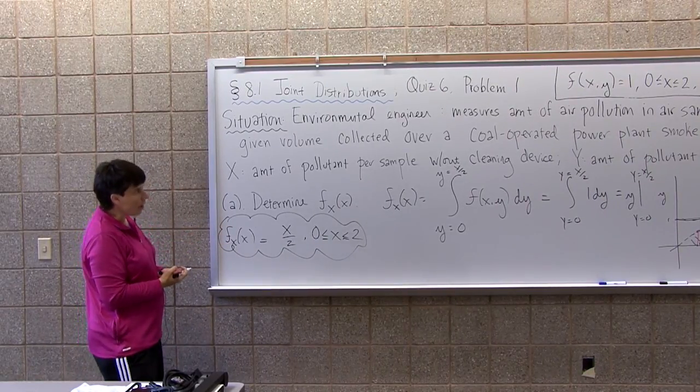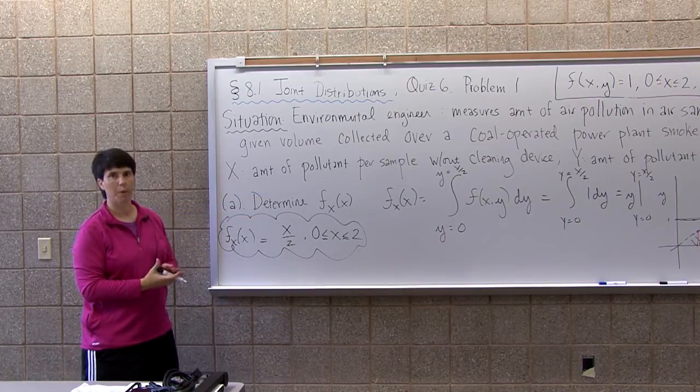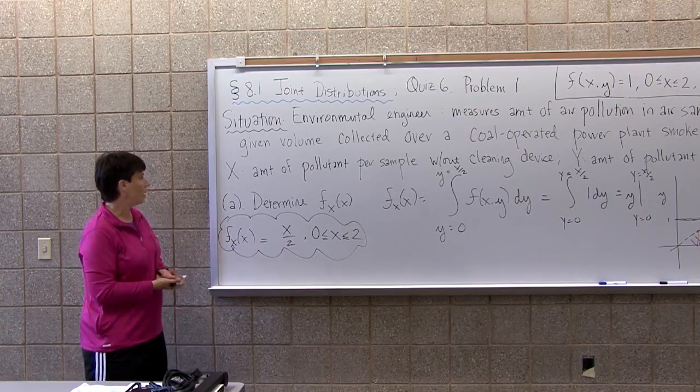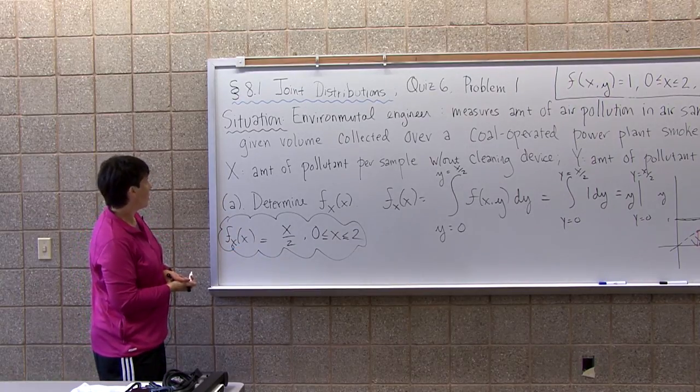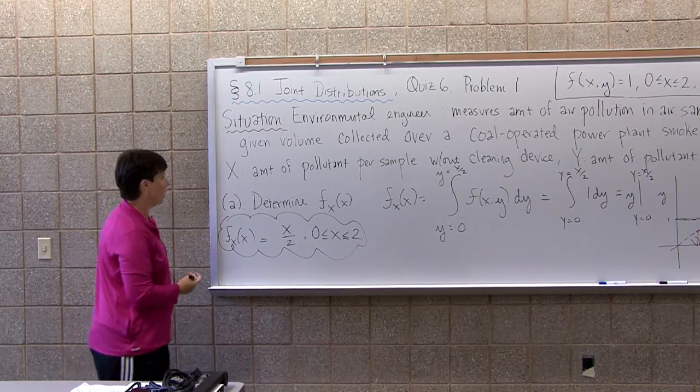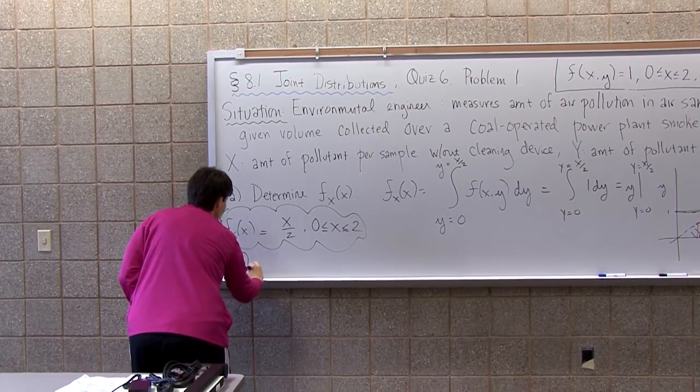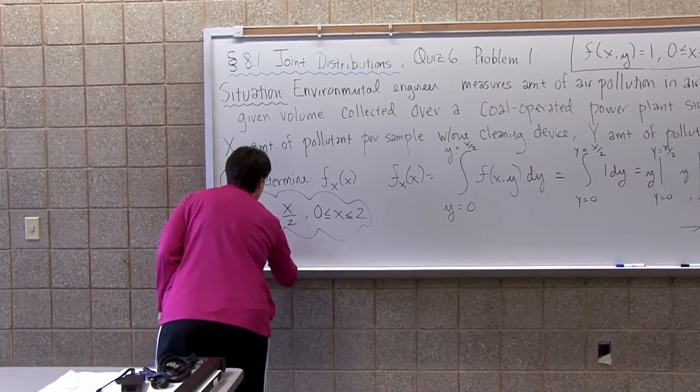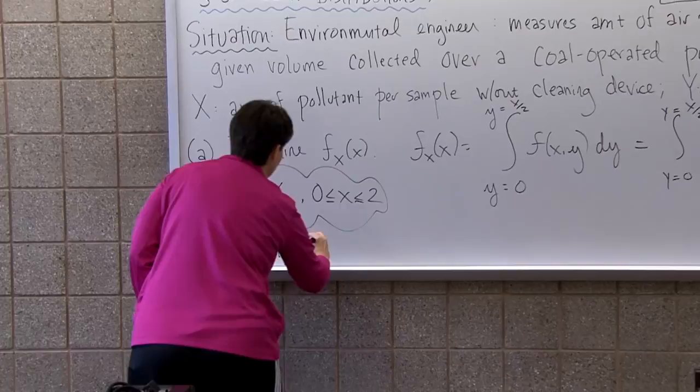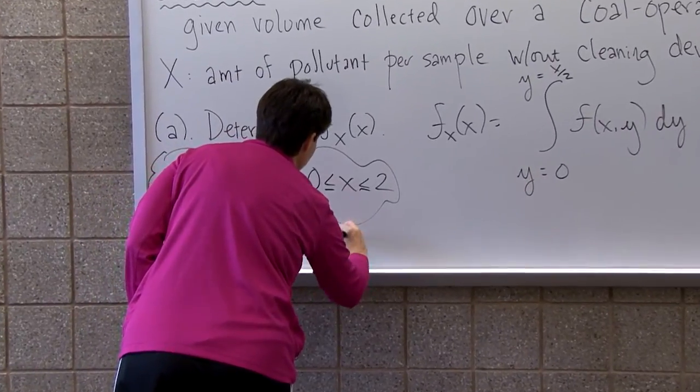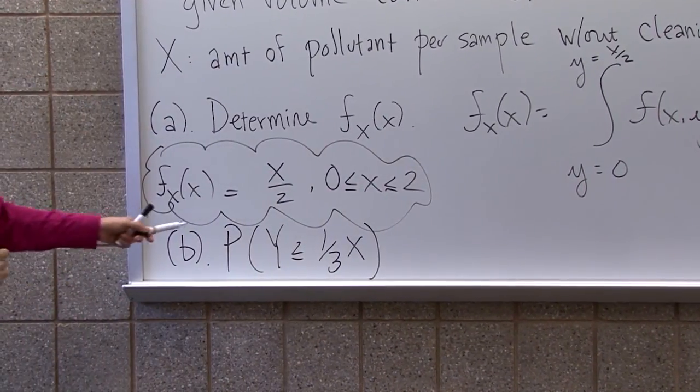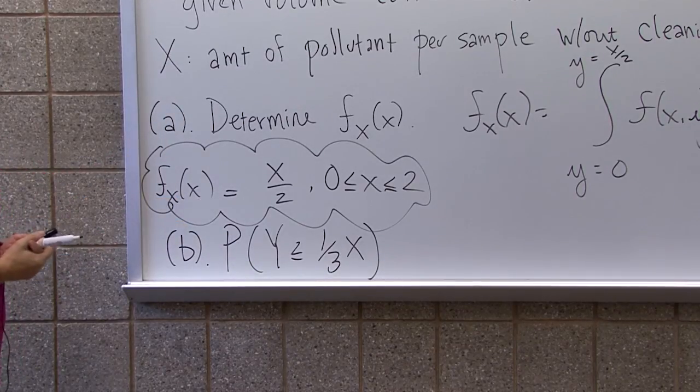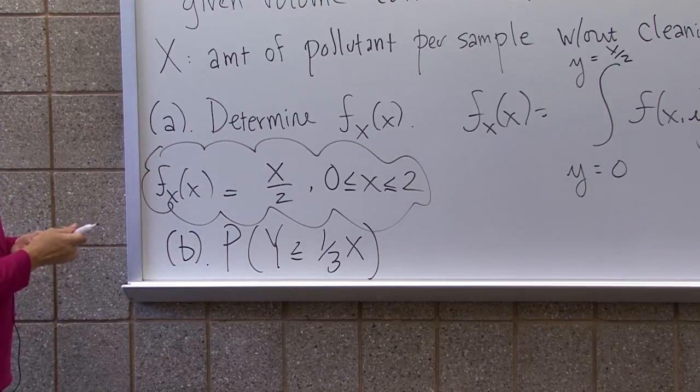If I wanted F of Y, I would integrate with respect to the X's. Now that I have this, I could find expected value of X. I thought I should also just set up the next part. Part B, I was asking you, let's just take this little bit of board to find the probability that Y is less than or equal to a third X. And again, I think if you have your picture and you know where that is in that region, then setting up the limits will be easy and finding this probability will be easy.